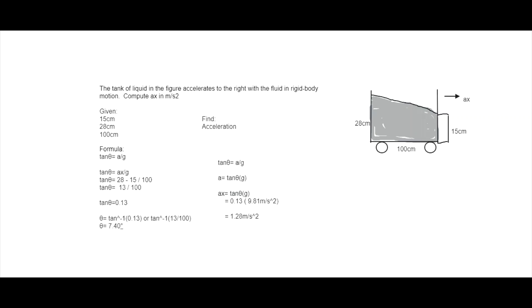So the problem is, the tank of liquid in the figure accelerates to the right with the fluid in rigid body motion. Compute AX in meters per second squared. So we have the given 28 cm, 100 cm, and 15 cm.